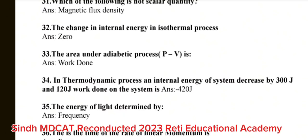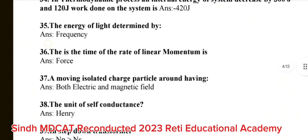Question number 34: In thermodynamic process, an internal energy of system decreases by 300 Joule. And 120 Joule work done on the system is? The correct answer is 420 Joule. Question number 35: The energy of light determined by? The correct answer is frequency. Question number 36: The time of rate of linear momentum is? The correct answer is force. Question number 37: A moving isolated charged particle around having? The correct answer is both electric and magnetic field.